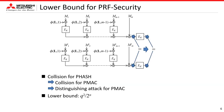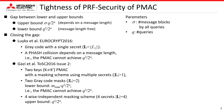Regarding the lower bound of PMAC, a collision in PHASH causes a collision in PMAC, but a random function does not have this property. So the structural difference between PMAC and a random function offers a distinguishing attack, and by birthday analysis the lower bound is q-squared over 2^n. There is a gap between the lower bound and the upper bound, because the upper bound includes message length but the lower bound does not.